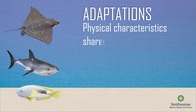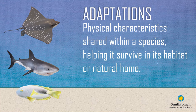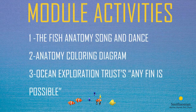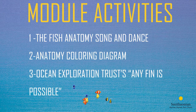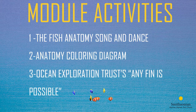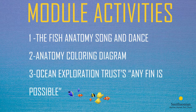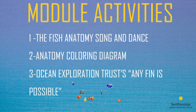The great diversity of shapes, sizes, and types of body parts found in fish are examples of adaptations — physical characteristics shared among a species that help them survive in their habitat or natural home. Now that you know how to identify, name, and describe some basic body parts of fish, go to the 'What's a Fish?' module and activity packet to complete these three activities: the Fish Anatomy Song and Dance, the Fish Anatomy Coloring Diagram, and the Ocean Exploration Trust's 'Any Fin Is Possible' activity to create your very own species of fish.